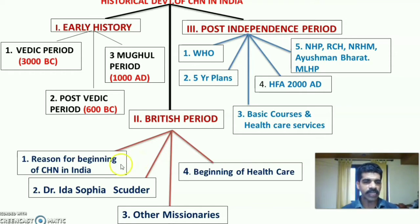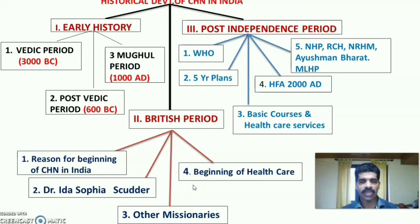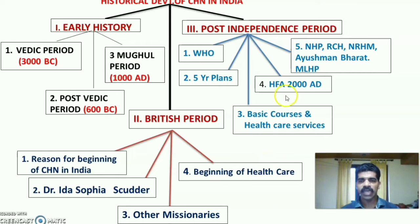The British period is divided into four areas: reasons for the beginning of community health in India, contribution from Dr. Ida Sophia Scudder, contribution from other English missionaries, and the beginning of health care during the British period. The post-independence period covers WHO, five-year plans, basic courses and health care services, health for all by 2000, NHP, RCH, NRHM, Ayushman Bharat, and MLHP.